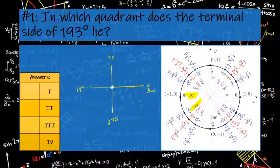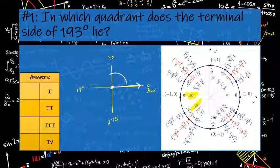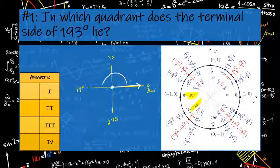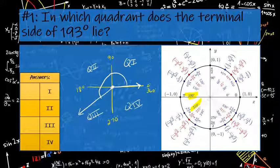So when you draw your actual angle, you start at 0 degrees, you would want to wrap around in a counterclockwise fashion, and go 90, 180, and you would go partway into this quadrant 3. So remember when you're labeling them, you would go around into each one of your quadrants, so my terminal side would end into quadrant 3, and that would be my ending answer.